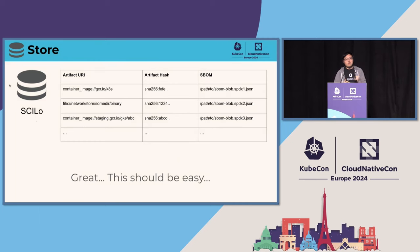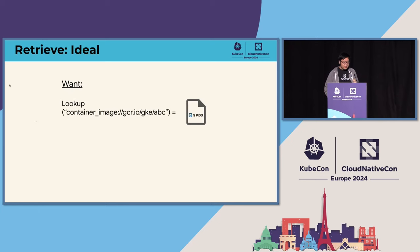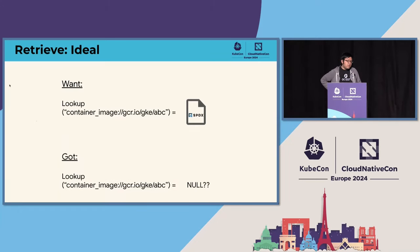With all builders now sending their SBOMs and attestations, we get a nice mapping: here's the URI of artifact, here's the URI for software, here's the hash, and here's the path to the SBOM. Retrieval should be simple — famous last words. We ran a query: look up this container ID, give me back an SPDX document. We got nothing. So where's the SBOM?